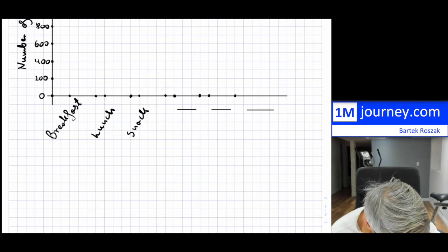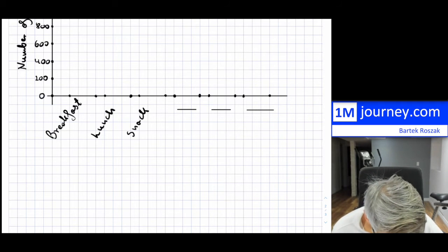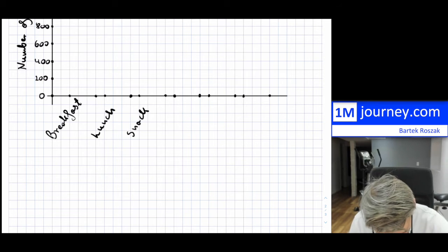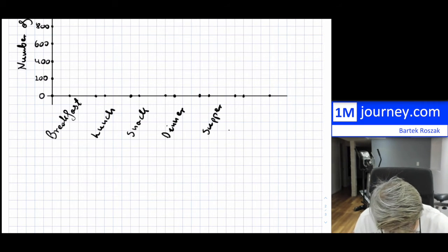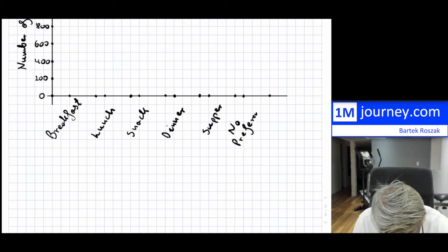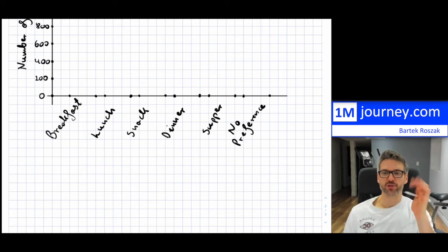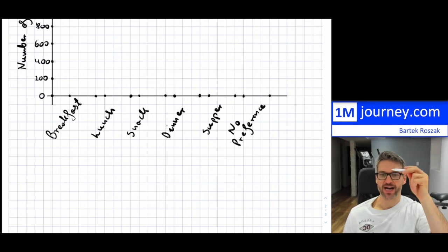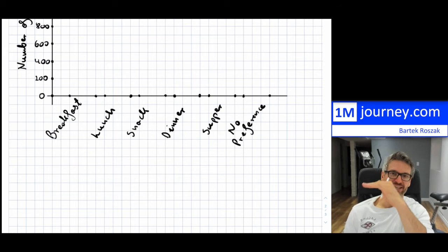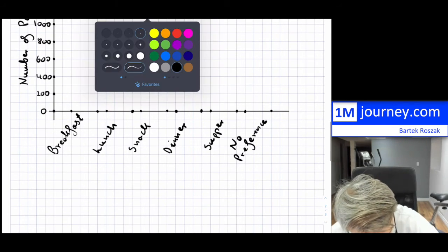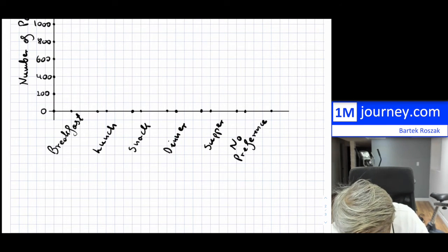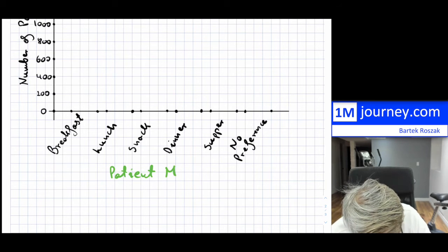Let me label the categories: breakfast, lunch, snack, dinner, supper, and no preference. You could alternatively abbreviate them — B, L, SN for snack, D, SU for supper, N for no preference — and then include a legend explaining what each abbreviation stands for. Once you have that, you can go ahead and construct the actual bars. I'll label the x-axis 'patient meal preferences'.